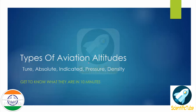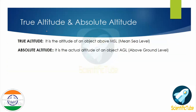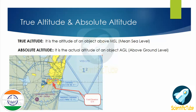There are basically five types: true altitude, absolute altitude, indicated altitude, pressure altitude, and density altitude. True altitude is the altitude of an object above mean sea level. Absolute altitude is the actual altitude of an object above ground level.